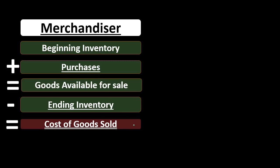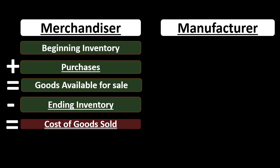Cost of goods sold is the expense that will be reported on the income statement — the most important expense for a merchandiser or a manufacturer, representing the cost of the inventory that we are selling. Now, if we look at a manufacturer, we can ask how we convert this formula to deal with a manufacturer rather than a merchandiser.